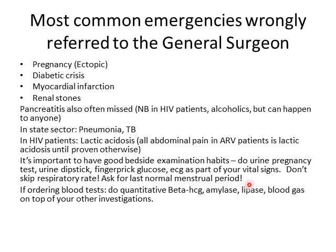This is going to cost the patient absolutely nothing — it should be part of your good history. Always ask for the last normal menstrual period in female patients. If they've missed a period, think ectopic. If they're mid-cycle, think mid-cycle pain. If they're on their period, think dysmenorrhea. For some reason, University of Pretoria students are not comfortable asking about the last normal menstrual period and tend to skip this question, leading to serious mistakes. Please learn to ask this question.